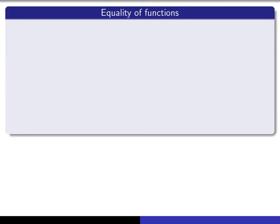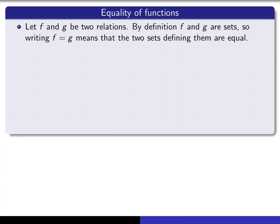So now we want to talk about what we mean when we say the two functions are equal. Well, strictly speaking, a function is a relation, and a relation is a certain subset of a certain Cartesian product. So to say that those two functions are equal is really just simply to say that the two sets defining those functions are equal.